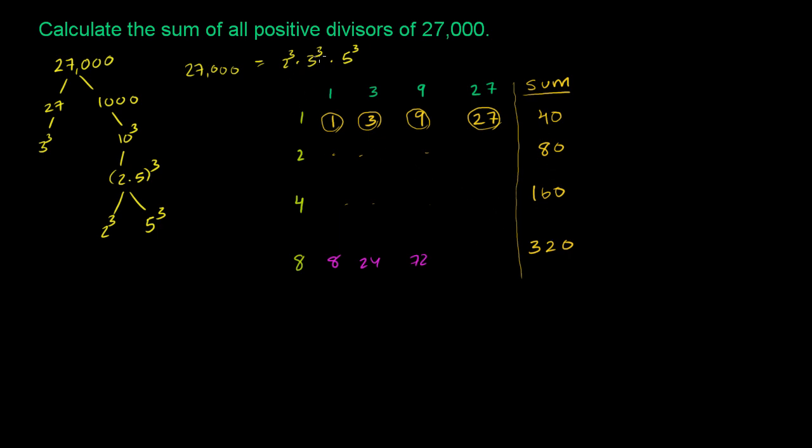So if you think about all of the divisors of 27,000 that are not divisible by 5, we have now figured out their sum. It's going to be the sum of all of these rows. So if you take 40 plus 80, you have 120, plus 160 is 280, plus 320 is 600. So this is the sum of all of the combinations of the 2s and the 3s that don't have any 5s in them.